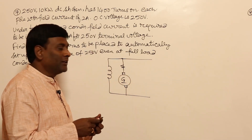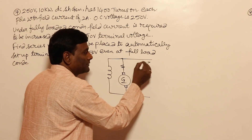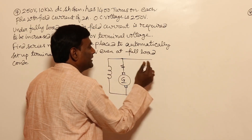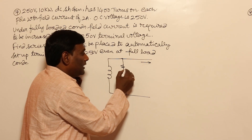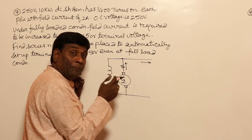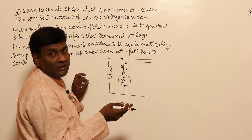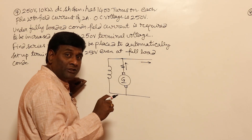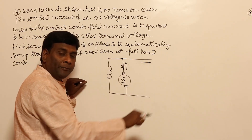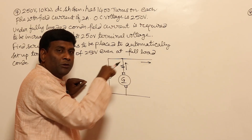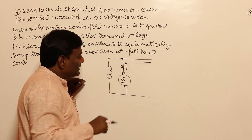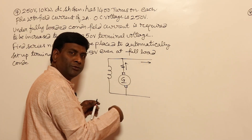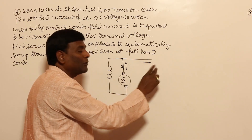If you keep increasing the load current, the current flowing through the armature will increase, so armature reaction will come into effect, reducing the net flux per pole. Since the prime mover speed is constant, the moment flux per pole is reduced due to armature reaction, the internally induced voltage will be reduced, and terminal voltage will droop.